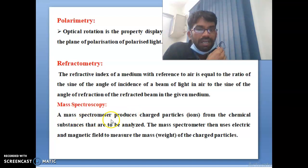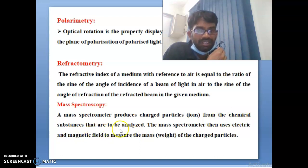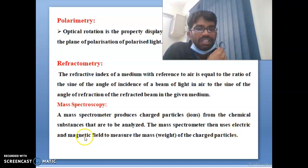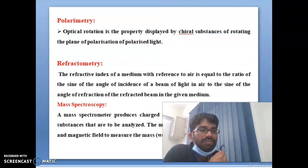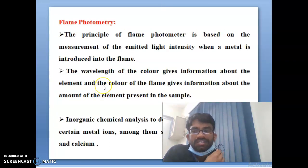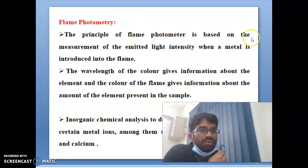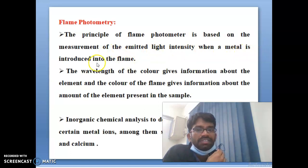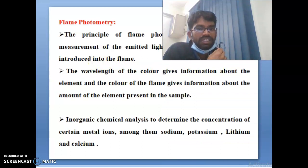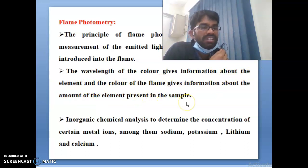Mass spectroscopy: a mass spectrometer produces charged particles (ions) from a chemical substance to be analyzed, then uses electric or magnetic fields to measure the mass/weight of those charged particles. Flame photometry: the principle is based on measuring the intensity of emitted light when a metal is introduced into a flame. The wavelength of the color gives information about the element, and the color of the flame gives information about the amount of element present in the sample.